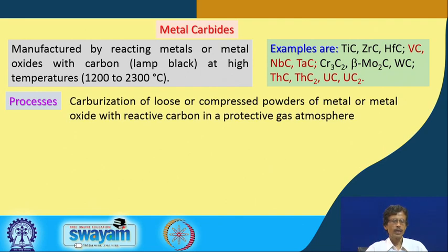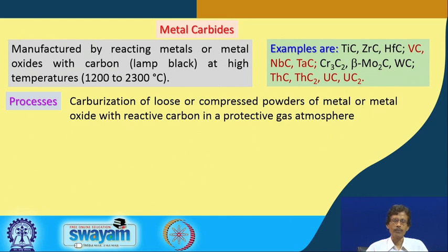The first manufacturing method is carburization of loose or compressed powders of metal or metal oxide with reactive carbon in a protective gas atmosphere. The protective gas is chosen so that the carbide does not react with it — specifically, so that carbon is not burned as carbon monoxide or carbon dioxide.